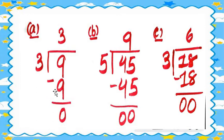I hope you all understood. In the table of 5, where does 45 come? Five nines are 45. So the quotient is 9.